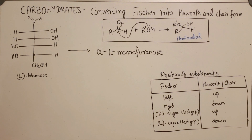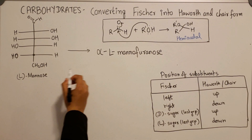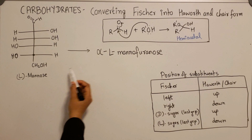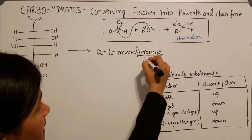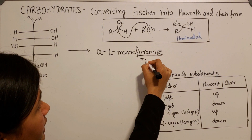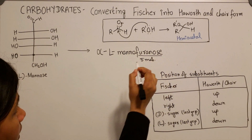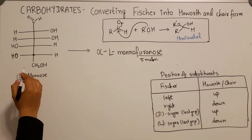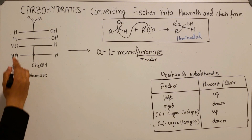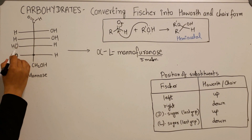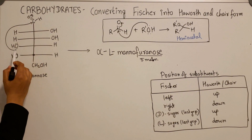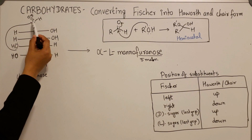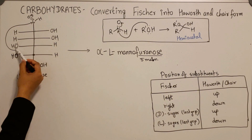The next question is to convert L-mannose from the Fischer projection into alpha-L-mannofuranose. Furanose means a five-membered ring containing oxygen. To create the five-membered ring, use the lone pairs from this oxygen to attack the electrophilic carbonyl, and you see a five-membered ring is formed: one, two, three, four, five.